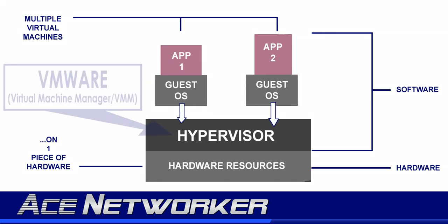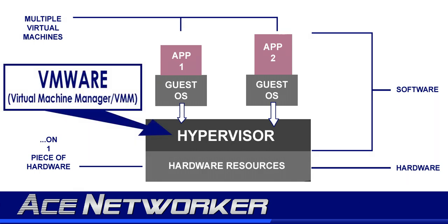VMware Workstation is a well-known example of a hypervisor — it's more often used than any other. It allows you to do things like add or remove virtual hard drives, virtual RAM, virtual network cards, and so on. You also get to use things in virtualization like a virtualized BIOS and system setup utility for every virtual machine you have.